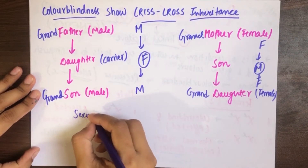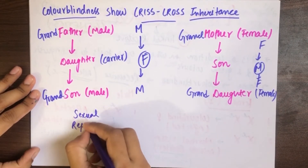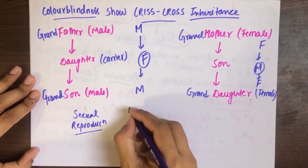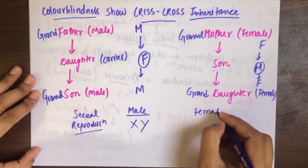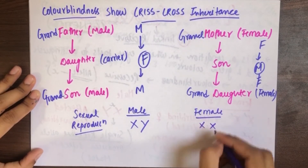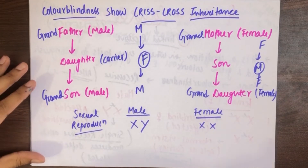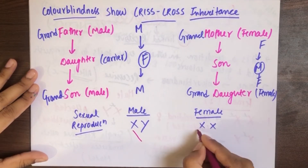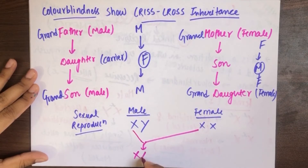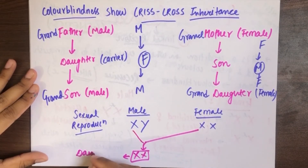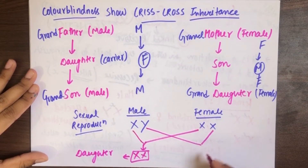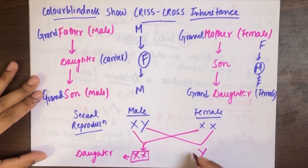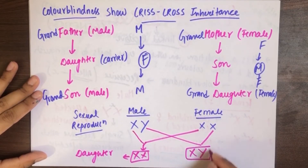जब भी sexual reproduction होता है: जब male का X और female का X मिलता है, तब बनता है XX — that is daughter. और जब male का Y और female का X मिलते हैं — क्योंकि female के पास तो option ही नहीं है — तब क्या बनता है? Son.